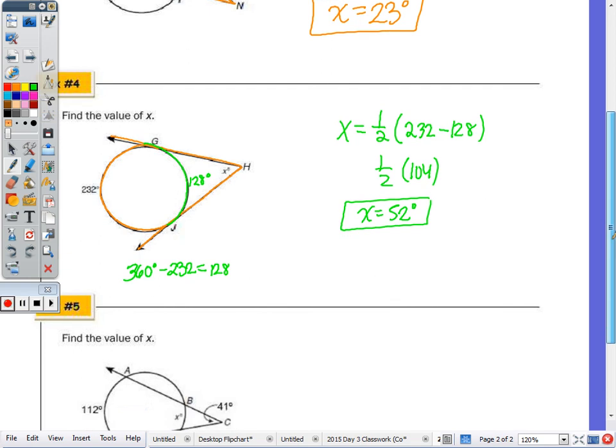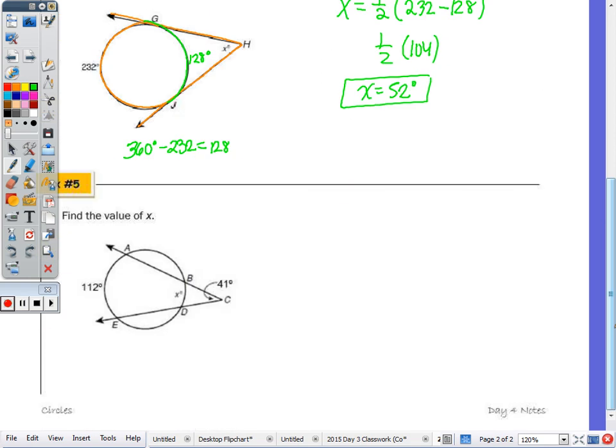Last one, number five. Find the value of X, and this time X is the arc. That is one of the arcs intercepted by that angle. I state the theorem out loud: the angle is equal to half the difference of the two arcs, larger minus the smaller.